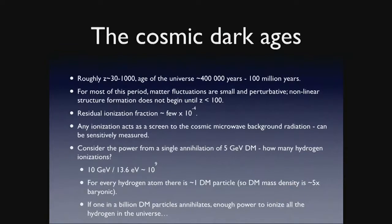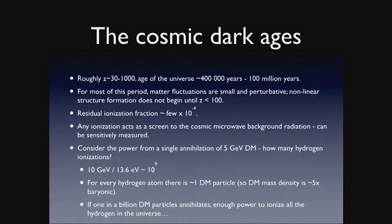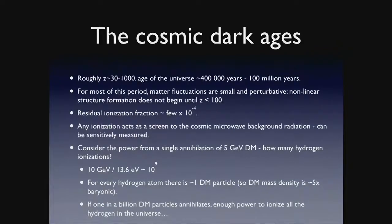You're now all experts on this, so I don't need to spend very much time on it. Between around redshift 30 to 1,000 — between the epochs of recombination and reionization — the universe was extremely close to neutral. The residual ionization fraction is a few times 10 to the minus 4, so only a few hydrogen atoms in every 10,000 are ionized. We can measure that low level of ionization very sensitively using the cosmic microwave background radiation. If you add any more free electrons between us and the surface of last scattering, those free electrons act as a screen to the CMB. So by measuring the CMB anisotropies, we can put pretty strong constraints on dark matter annihilation or decay — would it ionize the universe too much at early times?